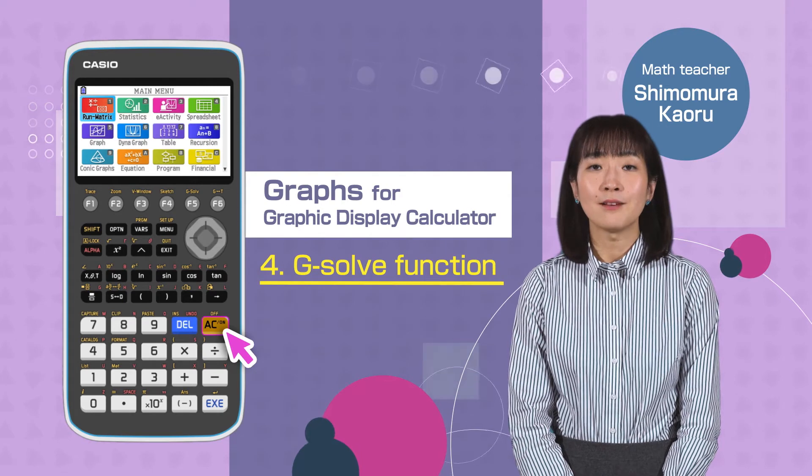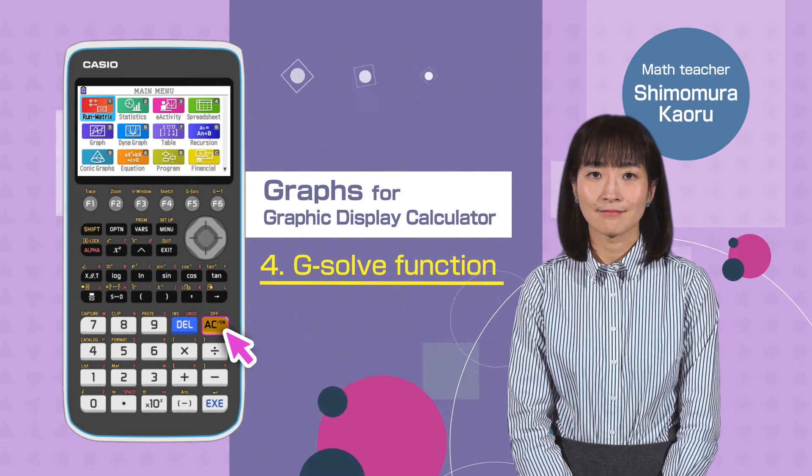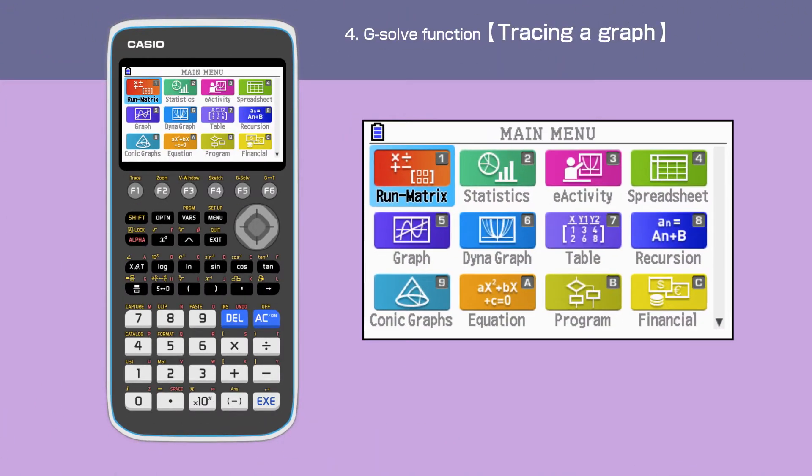Switch on your calculator, pressing AC button. Press the menu button to open the main menu. Then, move the cursor, or press 5 to select the graph menu.